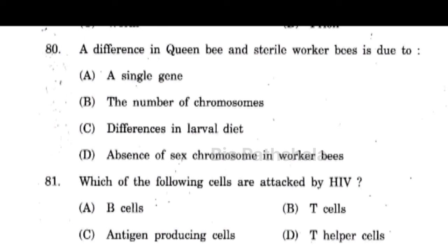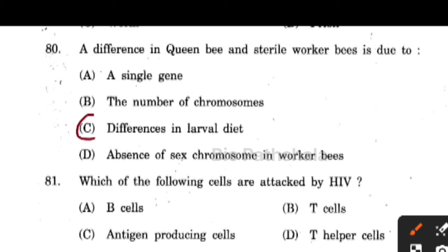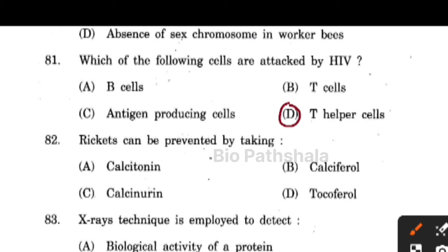Next question: the difference between a queen bee and a sterile worker bee is due to differences in their larval diet — the queen feeds on royal jelly. Next question: which of the following cells are attacked by HIV? That is the T helper cells.